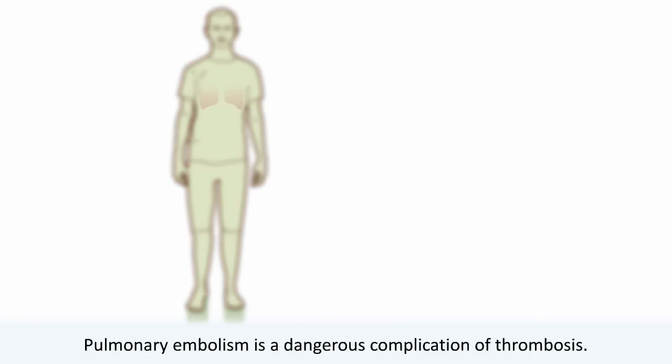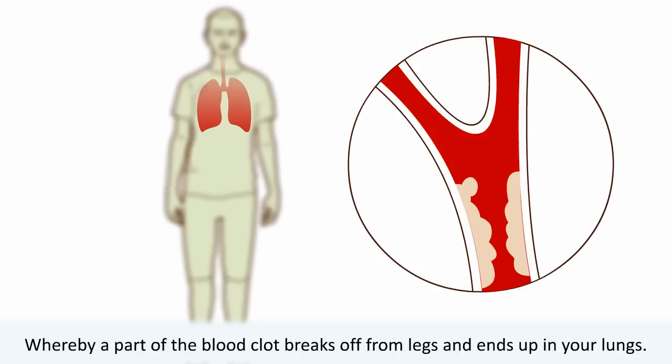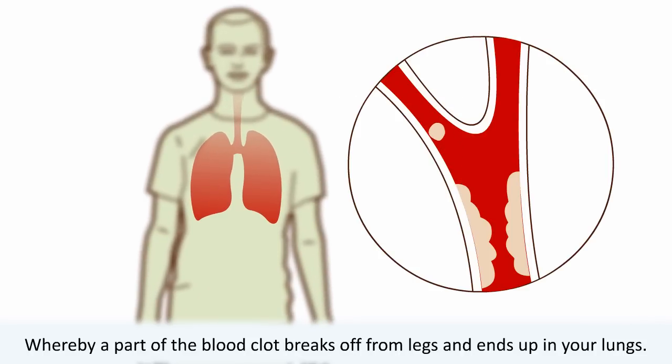Thrombosis is treated with anticoagulants. Pulmonary embolism is a dangerous complication of thrombosis, whereby a part of the blood clot breaks off from the legs and ends up in your lungs.